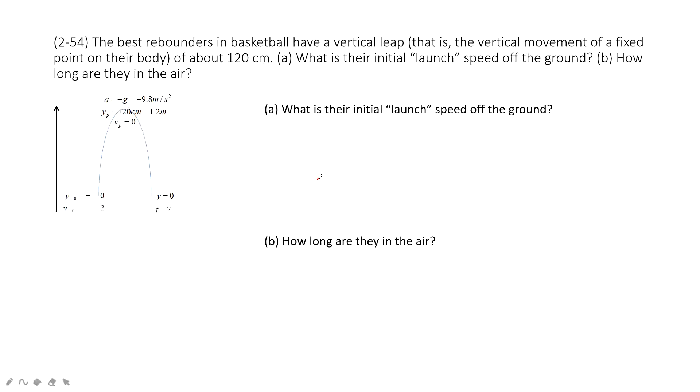You can see the best rebounder in basketball has a vertical leap. So the keyword, vertical leap, tells us the initial velocity is pointing up, right? It is getting a jump of about 120 cm.